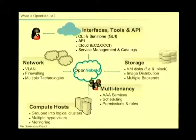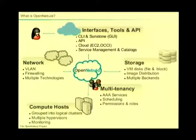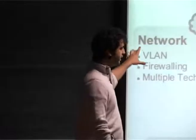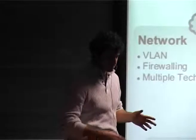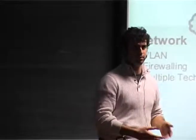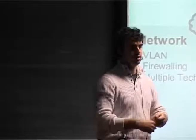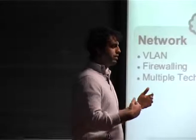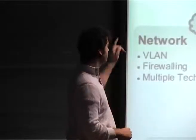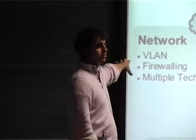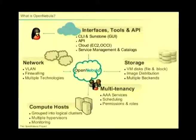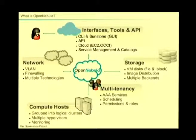OpenNebula does all those things you'd expect from cloud management software — it manages the lifecycle of virtual machines. You can deploy them, shut them down, cancel them, migrate them, live migrate them. Besides that, it also controls many other virtual resources. For networking, OpenNebula users want to be isolated from each other, so they can deploy the same networks without being able to get into other users' networks. We provide network isolation through VLAN, we have integration with OpenVSwitch, and we also have firewalling — the same way Amazon Web Services works, you can define your security group and filter out ports.